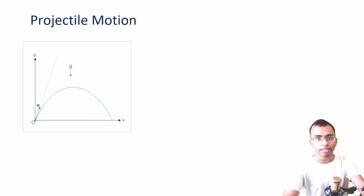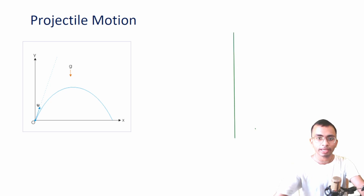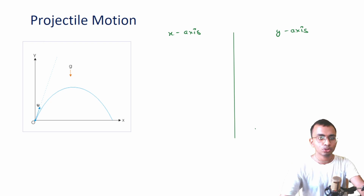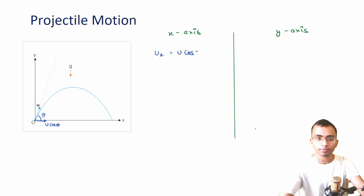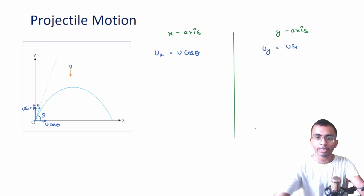Now we know that this motion is in a plane, but still we can separately analyze the motion along x-axis and y-axis because both axes are perpendicular to each other. If I write here for x-axis and here for y-axis — we have the initial velocity u at angle theta. The initial velocity along the x-axis is the component of u along x, which is u cos theta. And the initial velocity along the y-axis would be u sin theta.